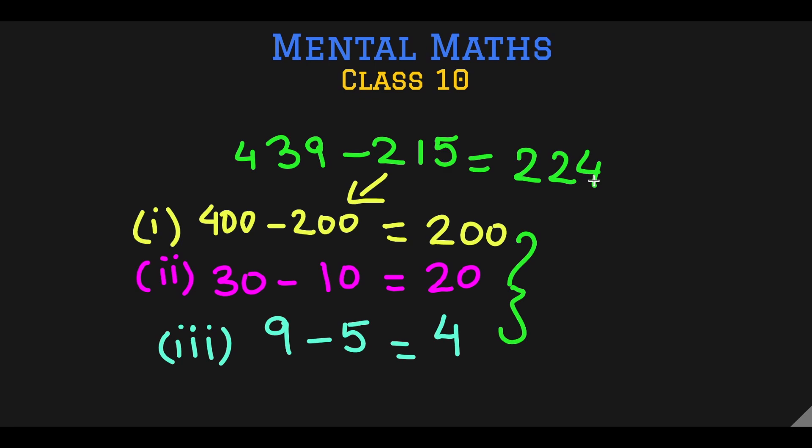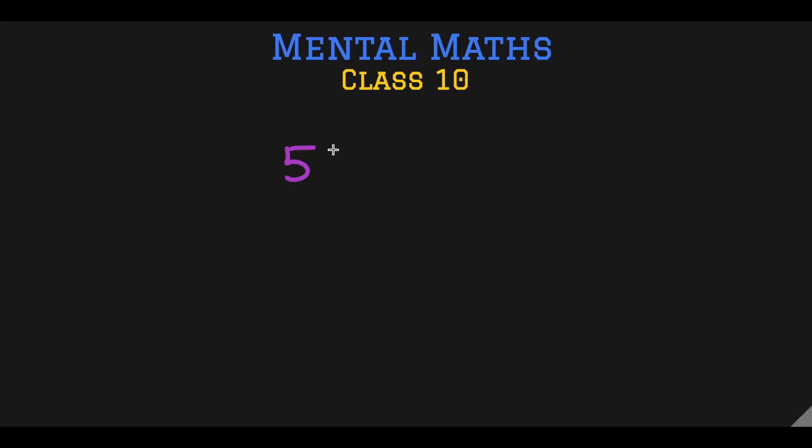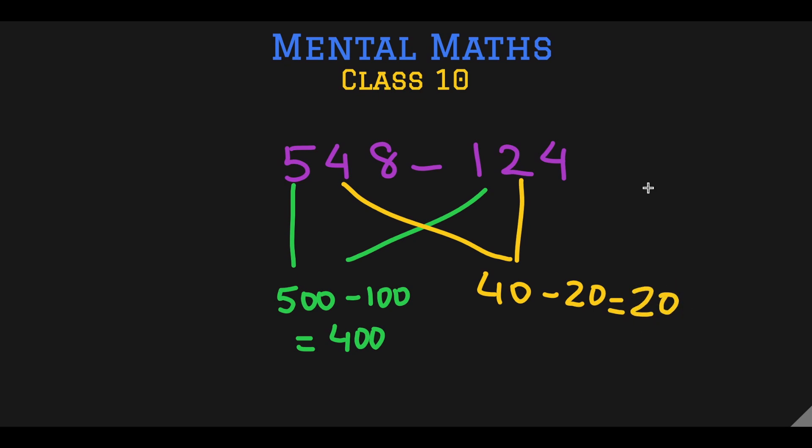Let's do one more question: 548 minus 124. Split the hundreds: 500 minus 100 equals 400. Split the tens: 40 minus 20 equals 20. And split the ones: 8 minus 4 equals 4. Our final answer is 424.